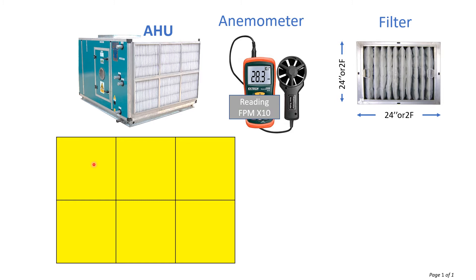I have calculated the readings for you. Here is 35 — it comes from this corner, taken from the anemometer and put into the grid. Again, we have taken the reading on the second corner — it is 38. The same way, we have calculated five readings for this filter.